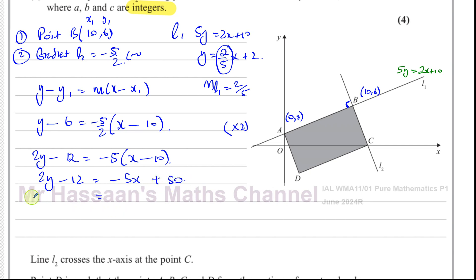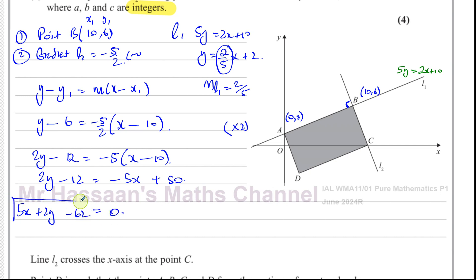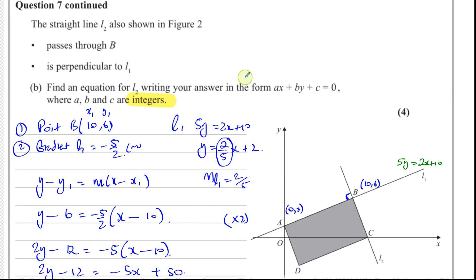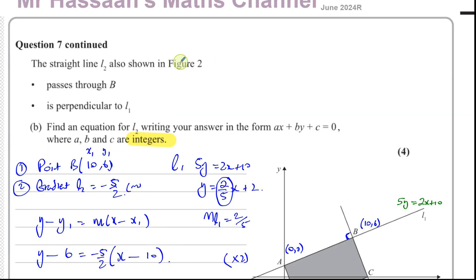Rearranging to get everything on one side — keeping the x term positive by adding 5x to both sides: 5x plus 2y minus 62 equals 0. That is the equation of line 2 in the required form, and that's the answer to part B.